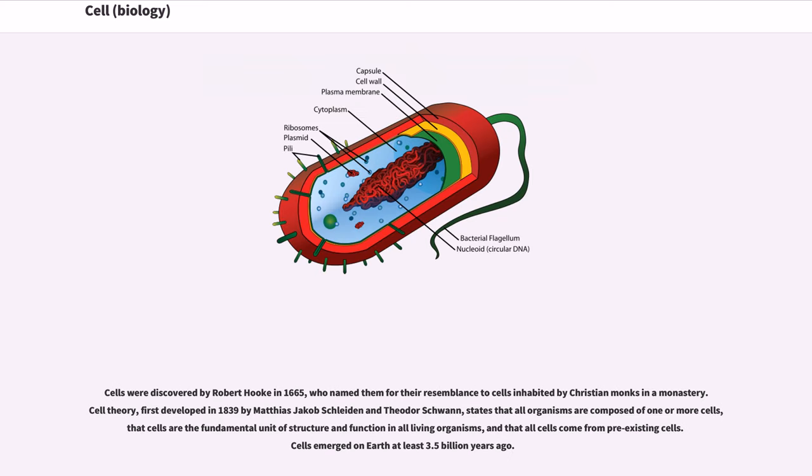Cells were discovered by Robert Hooke in 1665, who named them for their resemblance to cells inhabited by Christian monks in a monastery.